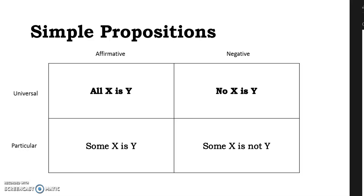We have four possibilities. An affirmative universal statement: 'all x is y.' A negative universal statement: 'no x is y.' A particular affirmative statement: 'some x is y.' Or a particular negative statement: 'some x is not y.' For convenience, we label these with the letters A, E, I, and O. A — universal affirmative. E — universal negative. I — particular affirmative. O — particular negative.